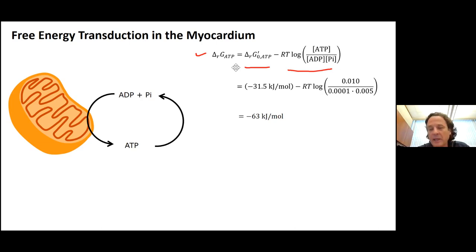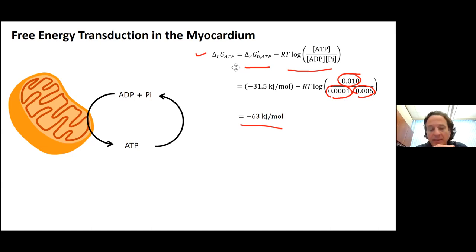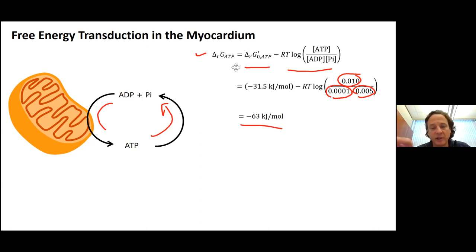The ATP concentration in a cardiomyocyte is about 10 millimolar. The ADP concentration is about one-hundredth of that, roughly 1 micromolar. Inorganic phosphate is hard to measure but we think it's about 0.5 millimolar. When you do this calculation you get about minus 63 kilojoules per mole. The minus means this process — ATP hydrolysis — is driven to go in the forward direction.